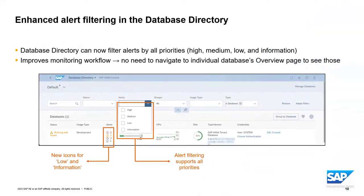Let's take a look at cockpit SP 16 new features, starting with enhancements in the database directory. Now you can filter alerts by all priorities. In the past, you could only see high and medium priority alerts. Customers requested the ability to see all priorities to make management of a large landscape easier, without needing to navigate into individual databases to see low or informational alerts. Now you can see them all in one spot in the database directory. The drop-down box at the top shows all priorities, and we added new icons in the alerts column so you can see low and information priority alerts at a single glance.